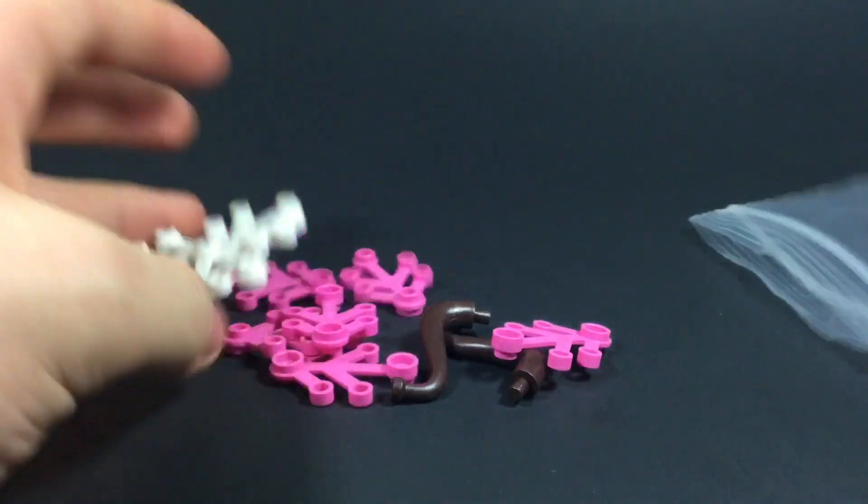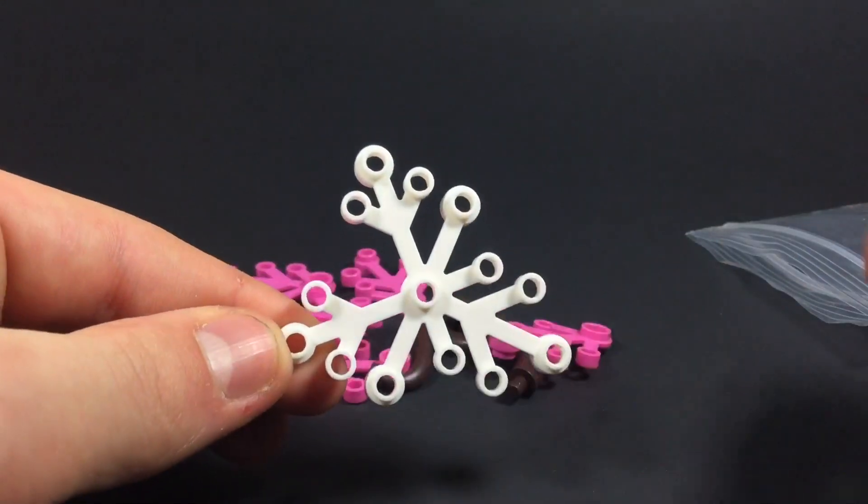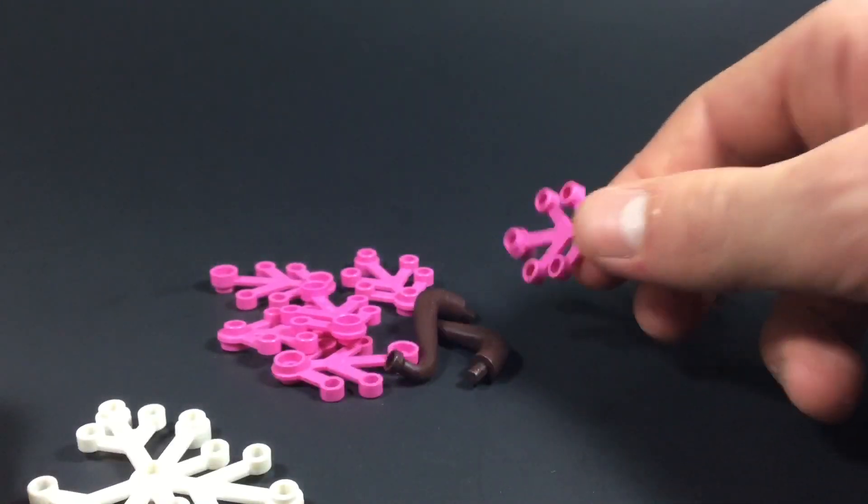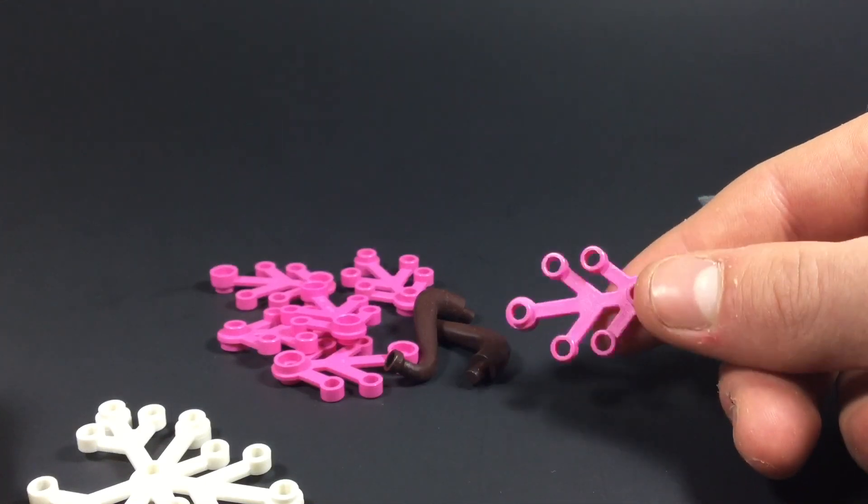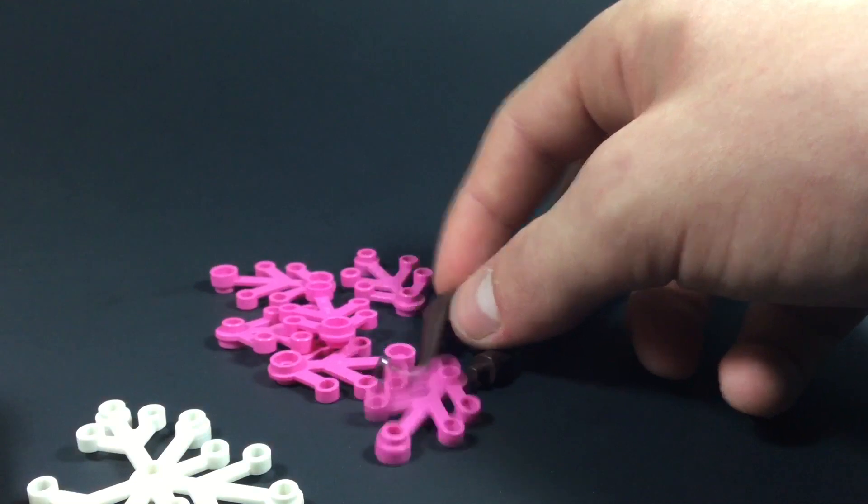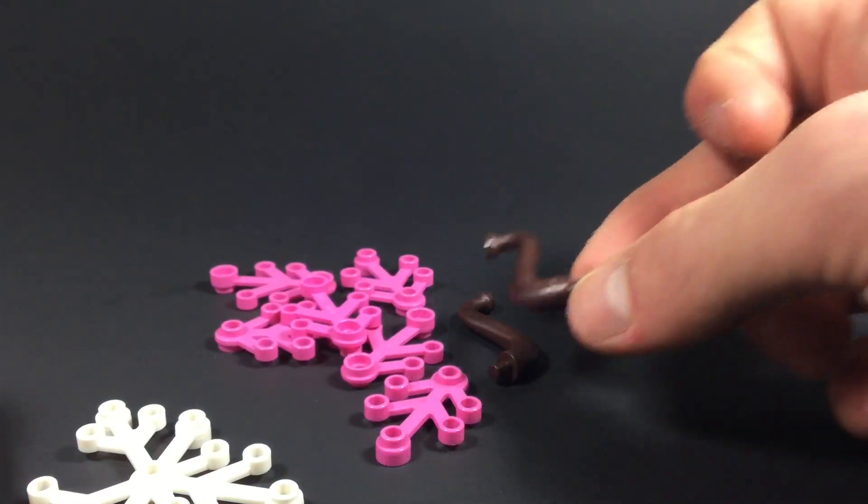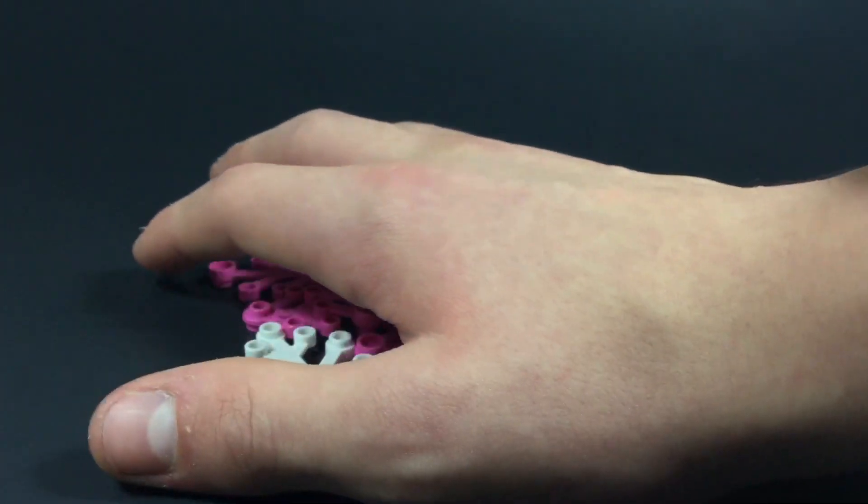As you can see, there are lots of leaf pieces. There's this one white one, the larger leaf pieces, and I believe there are six of these dark pink ones. Those are going to be very useful for the MOC. I've also got some of these dark brown elephant trunk pieces which will be used in the MOC as well.